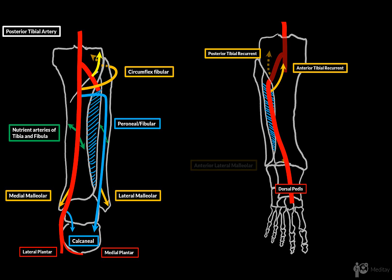Then we have the anterior lateral malleolar and the anterior medial malleolar artery for the blood supply around the ankle. And that covers the main side branches of the anterior tibial artery.